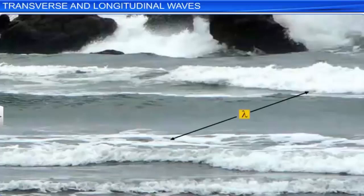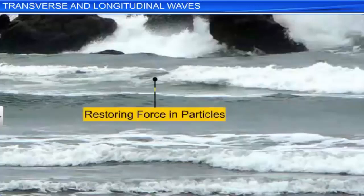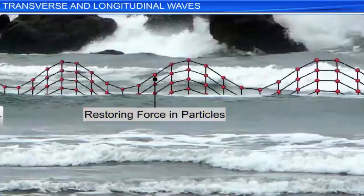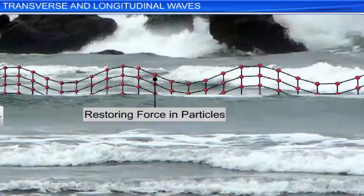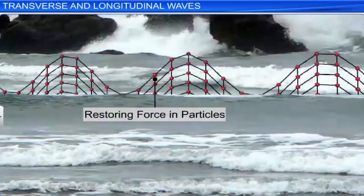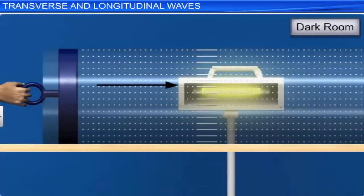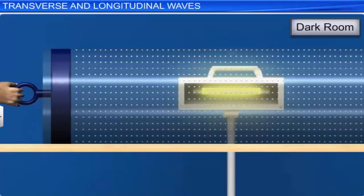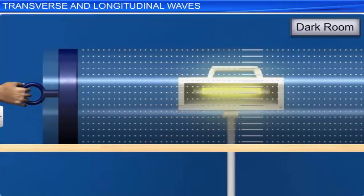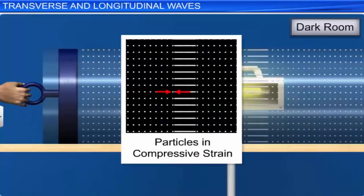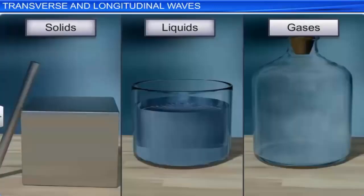In a longitudinal wave, as the wave propagates, each element of the medium undergoes a compressive strain. The elements in solids, liquids and gases have the capacity to undergo a compressive strain. Therefore, a longitudinal wave can propagate through solids, liquids and gases.